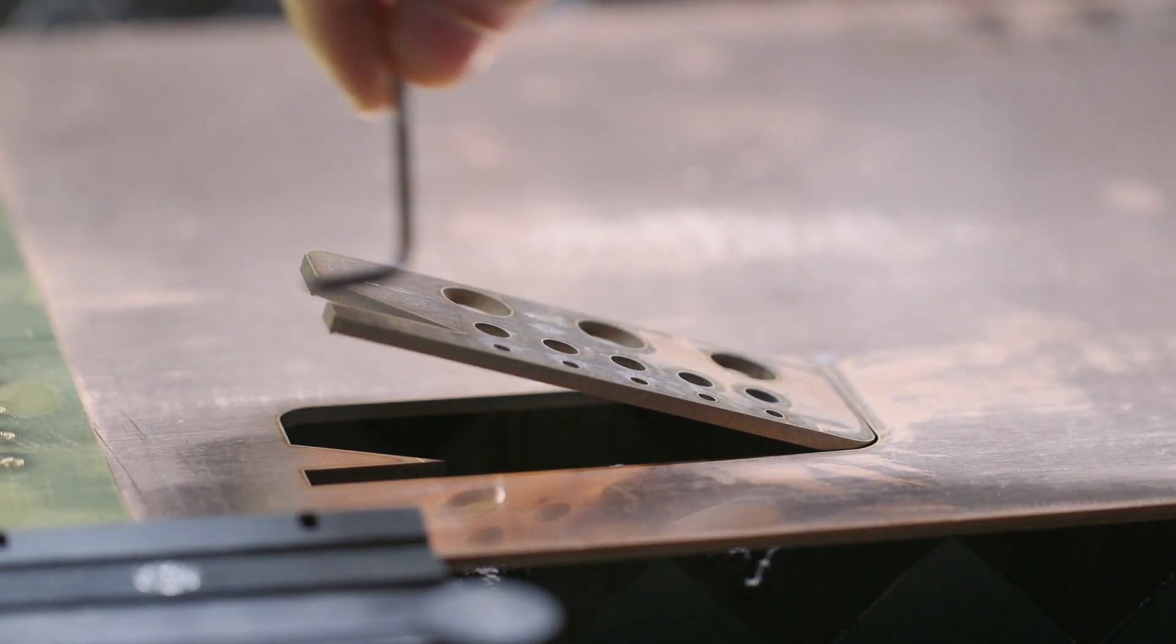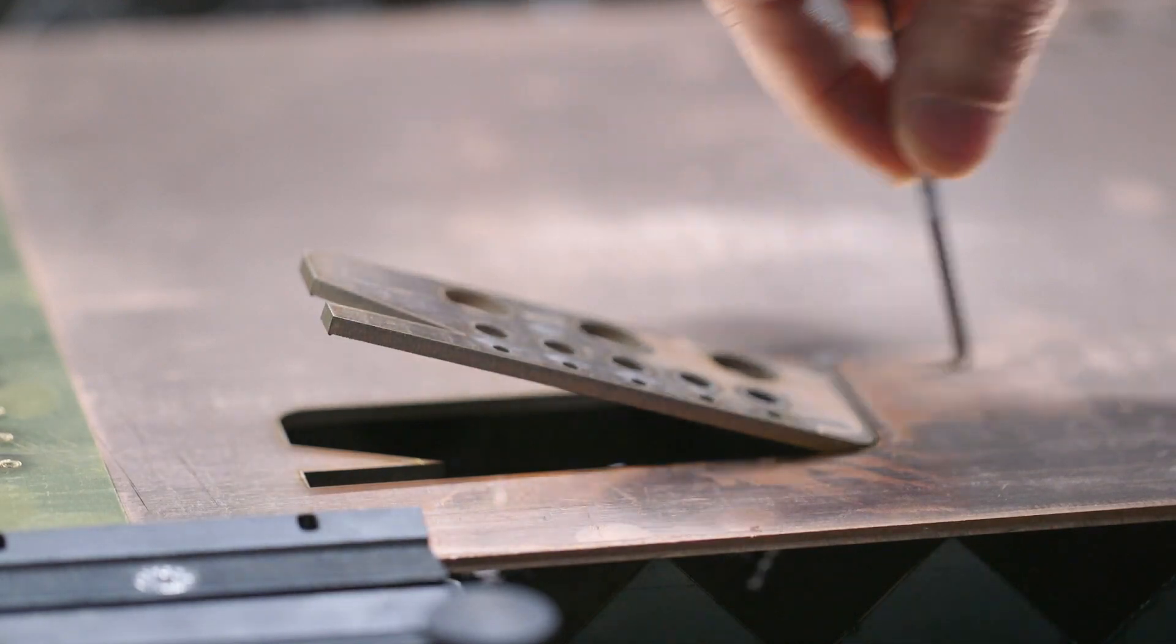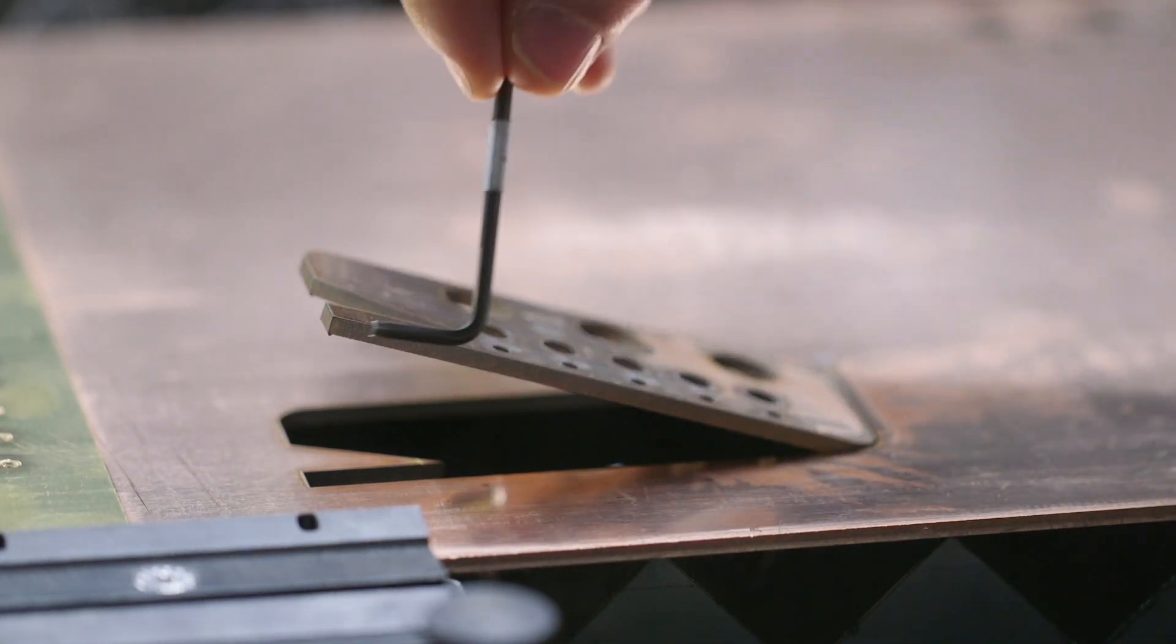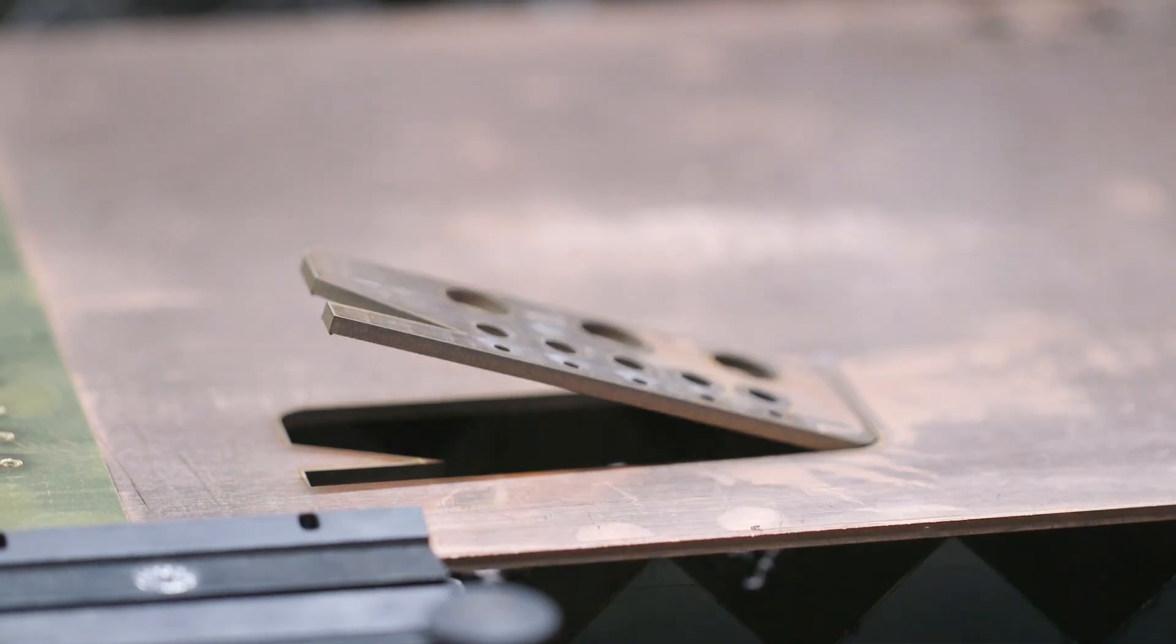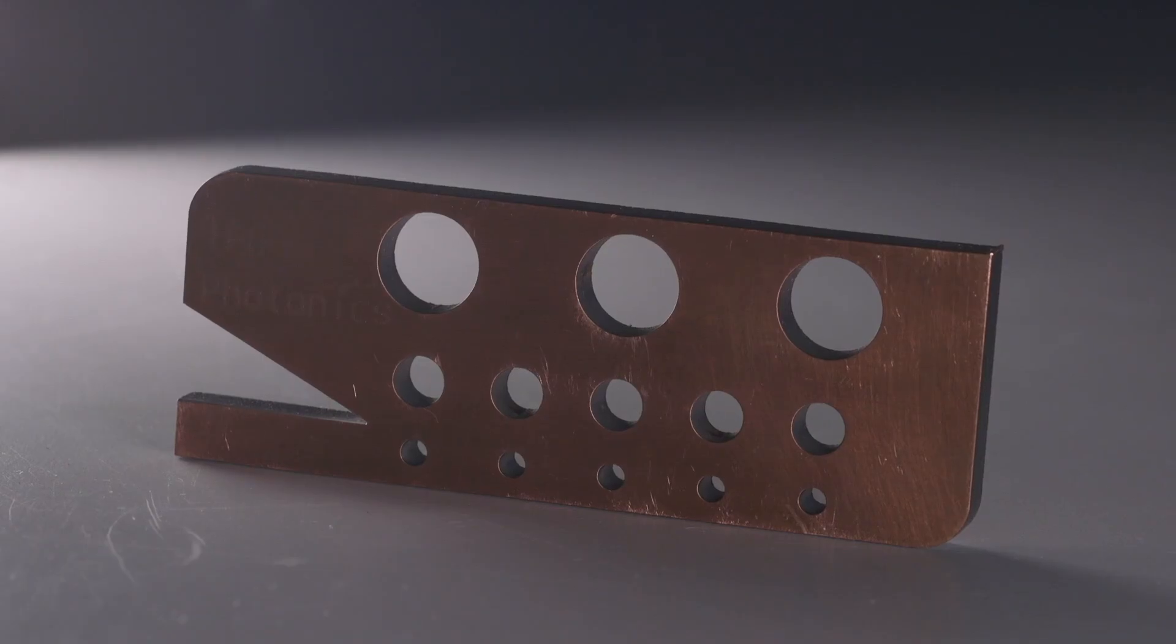You see there is a little bit of dark edge because of using oxygen as the gas and there shouldn't be significant dross.